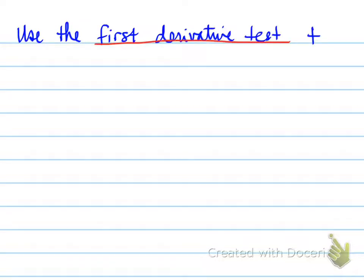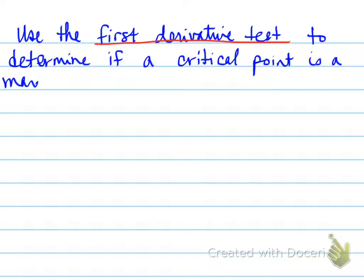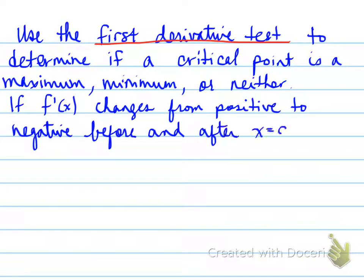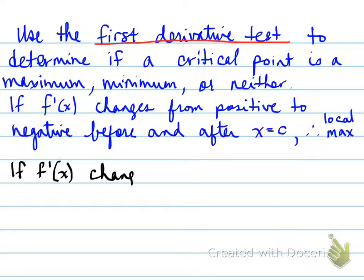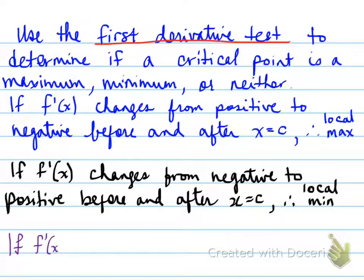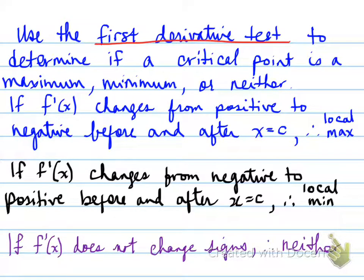Use the first derivative test to determine if a critical point is a maximum, minimum, or neither. If f'(x) changes from positive to negative before and after point c, then it's a local max. If f'(x) changes from negative to positive before and after x equals c, it's a local minimum. If f'(x) does not change signs, then it is neither.